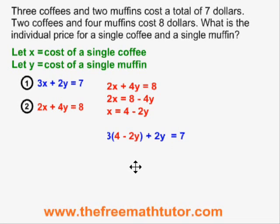Three times 4 minus 2y plus 2y equals 7. Now I just have to use algebra to isolate the y. I get 12 minus 6y plus 2y equals 7. Negative 4y equals 7 minus 12. Negative 4y equals negative 5.